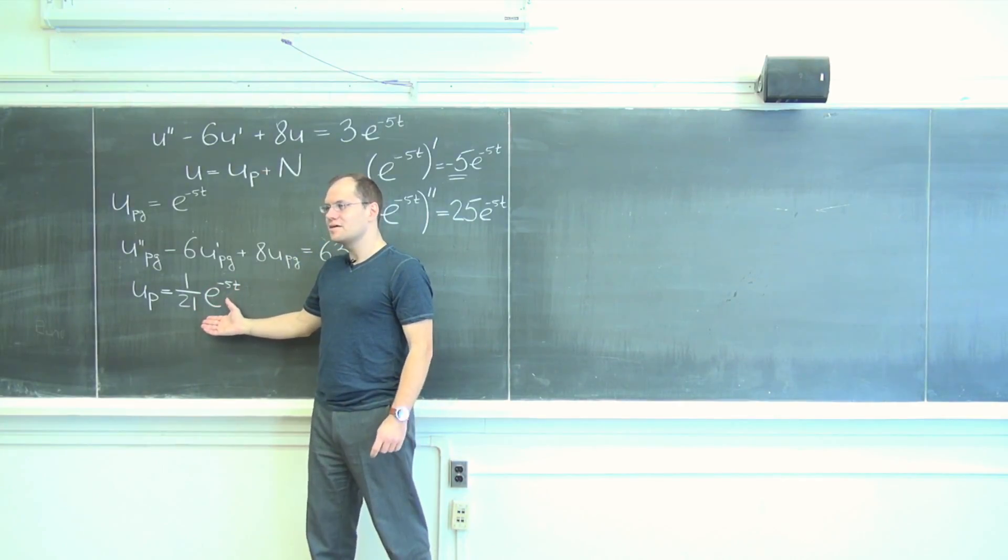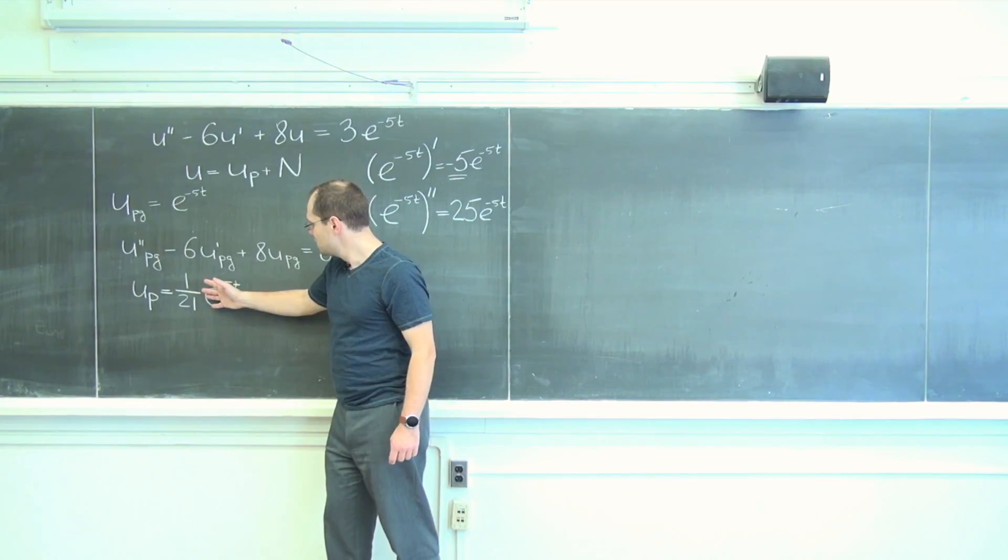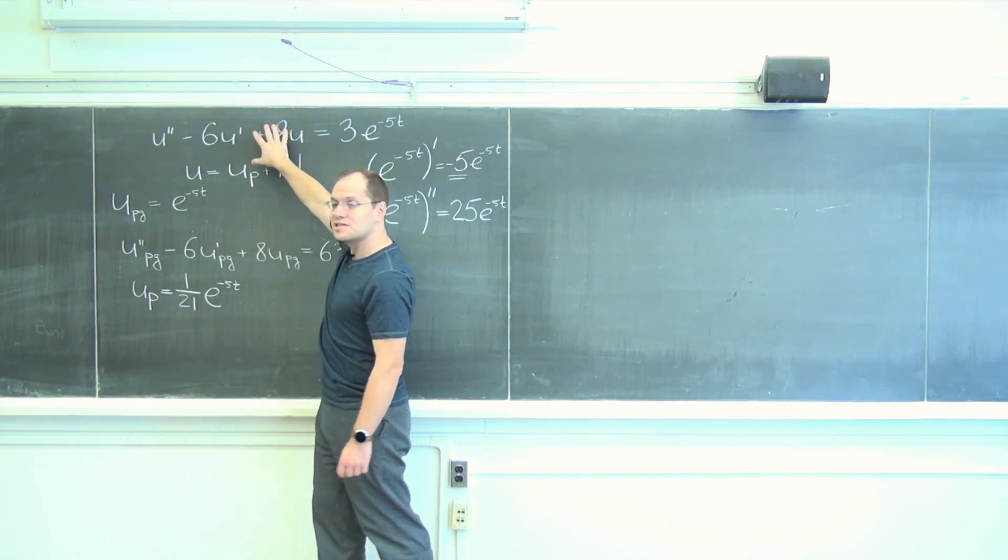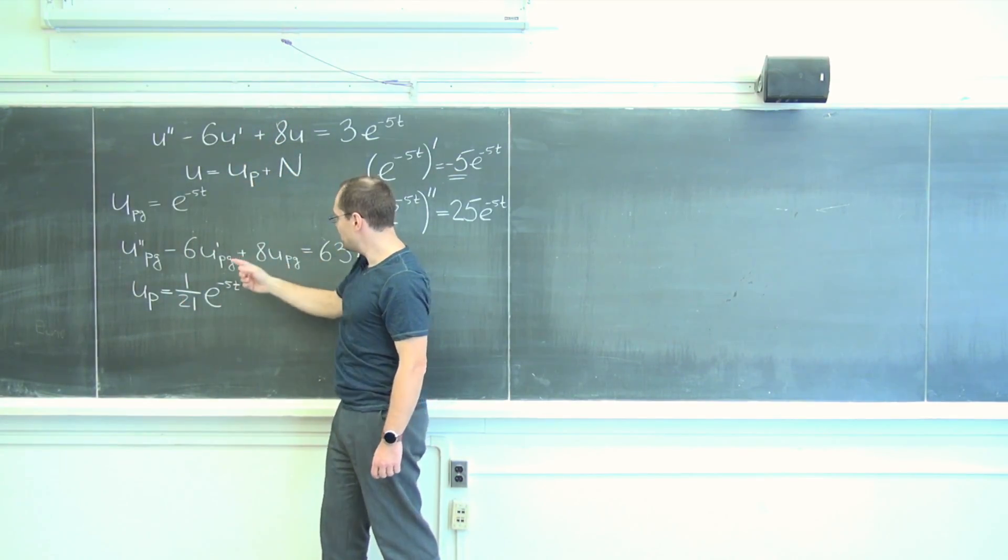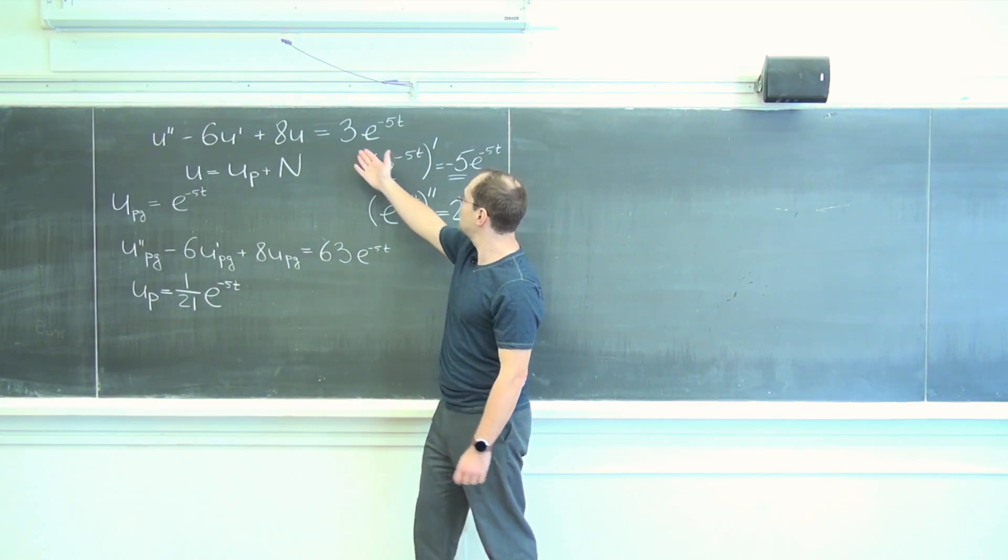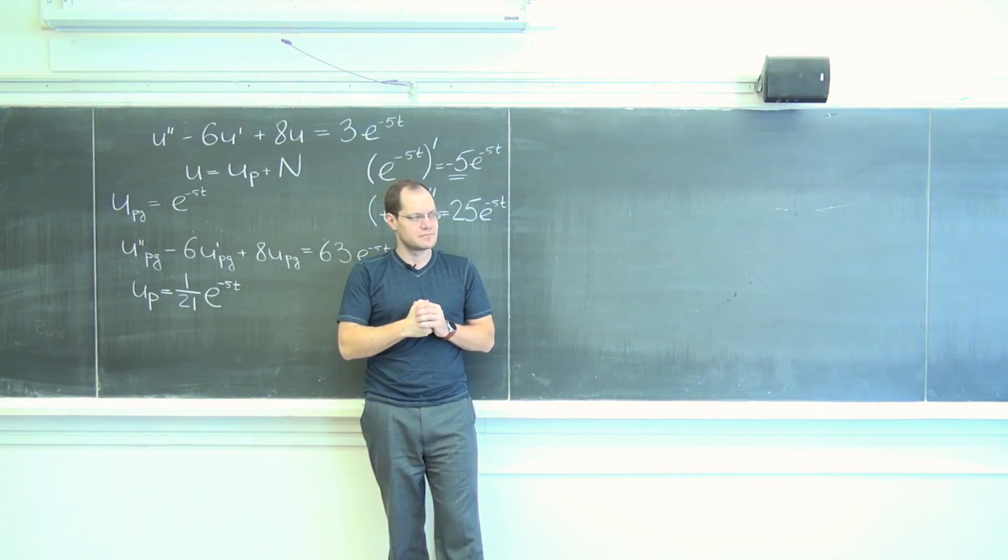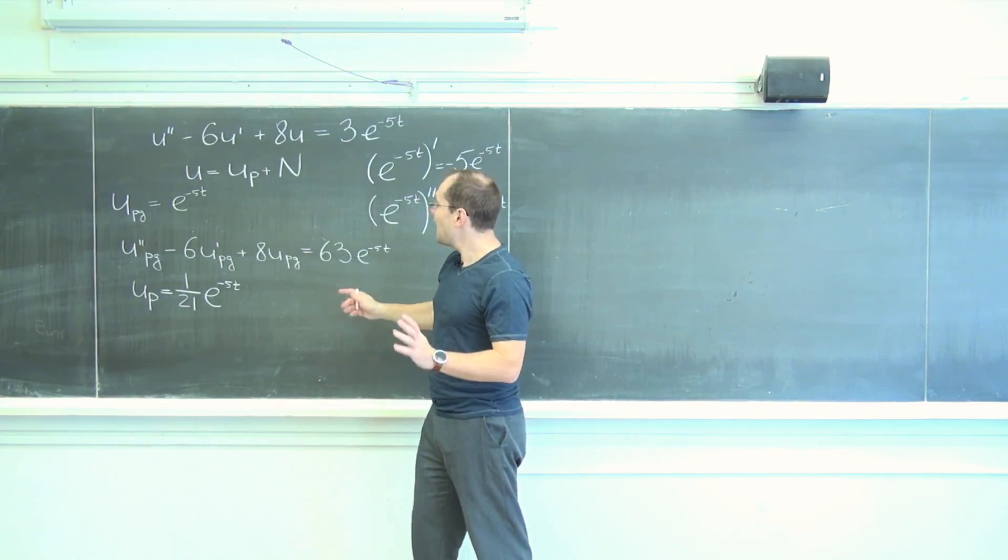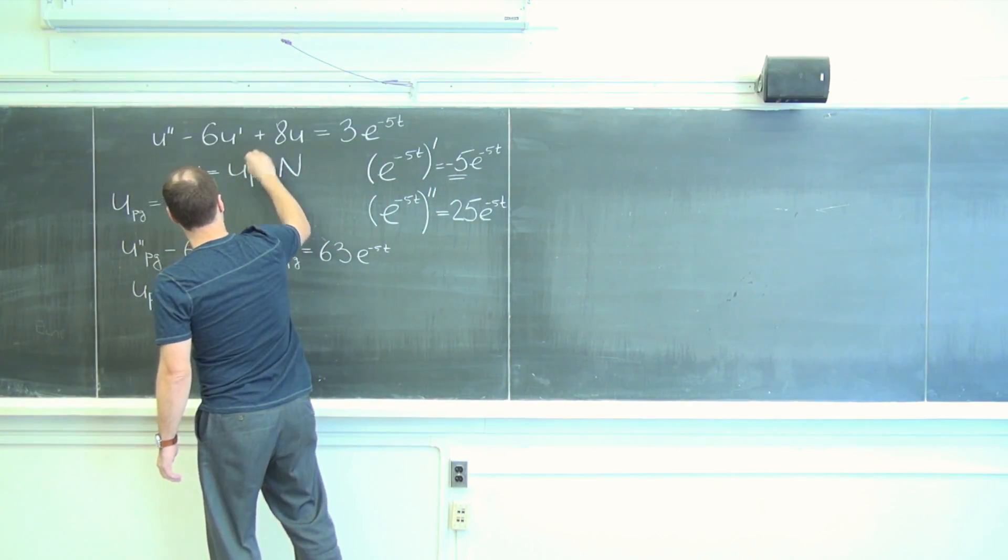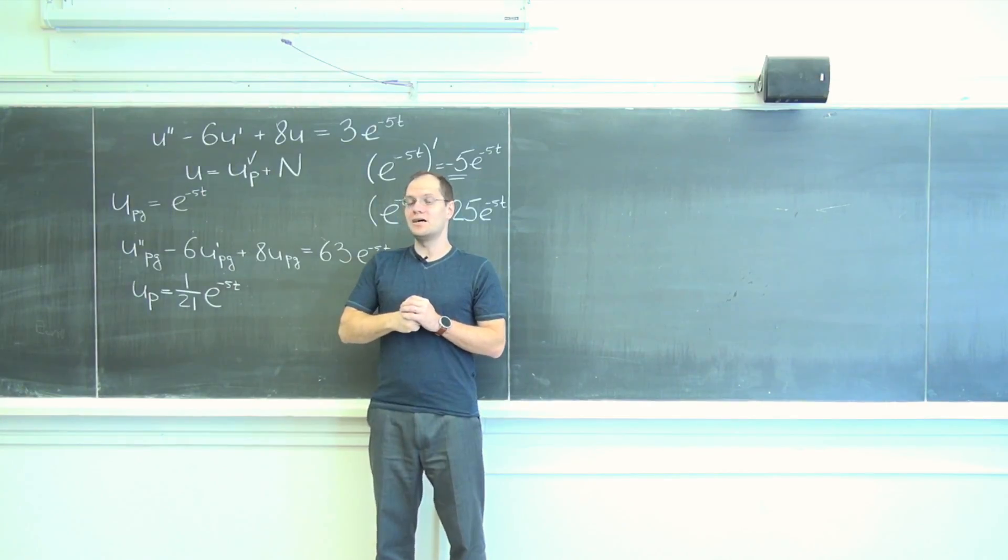Does everybody understand where 1 over 21 came from? Well, because when I take this and plug it into this operator I will pick up a factor of 63 which will cancel the 21, and so I'll have 3 e to the minus 5 T and that's my correct target. Okay, so we're half done. We have our particular solution. Now we have to talk about the null space.